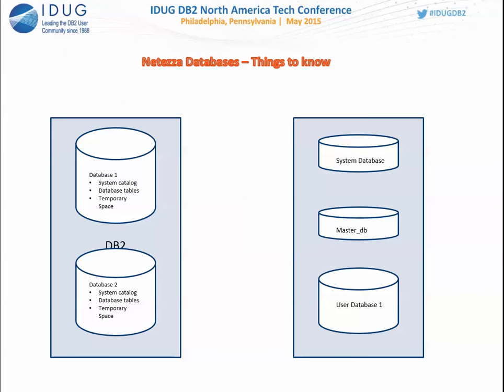In DB2, system catalogs live within each user database — if you create 10 databases, each has its own catalog tables. In Netezza, for one appliance, you have a system database that holds all system catalog information for all database objects on that appliance. There is also a master DB, which is a template used for creating user databases via the CREATE DATABASE command. The key difference is that all system catalogs are in a separate database called 'system'.